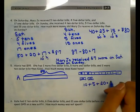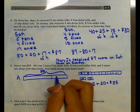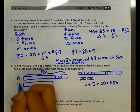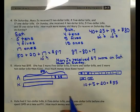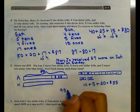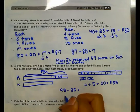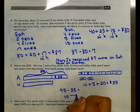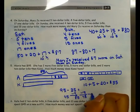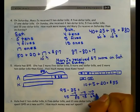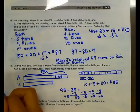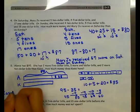So I know that Alexis has $35 more than Cassie. To figure out how much Cassie has, I'm going to subtract: $95 minus $35. $95 minus $10 gives me $85, minus $10 more gives me $75, minus $10 more gives me $65, minus $5 gives me $60. So Cassie has $60.